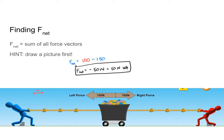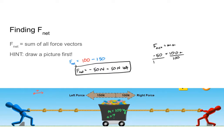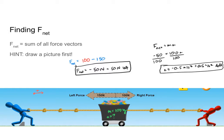Now, when I have my F net, I can use that to find my mass and acceleration. For example, if this block has a mass of 100 kilograms and I want to know what its acceleration is, having found my F net I can do that. Because I know that F net equals mass times acceleration, thus acceleration equals F net over mass. Plugging in my numbers: negative 50 newtons equals 100 kilograms times acceleration. Dividing both sides by 100, I get that my acceleration is negative 0.5 meters per second squared, or 0.5 meters per second squared to the left.